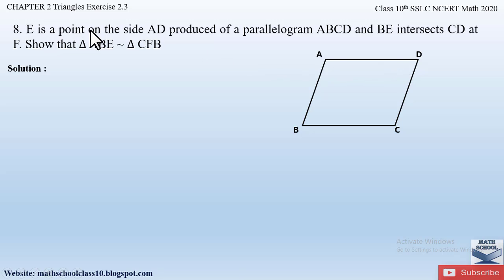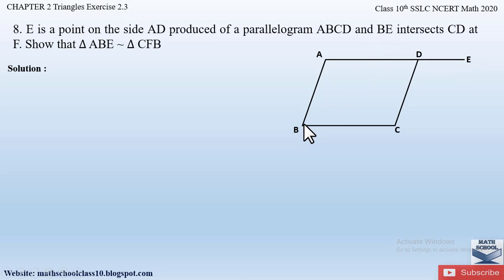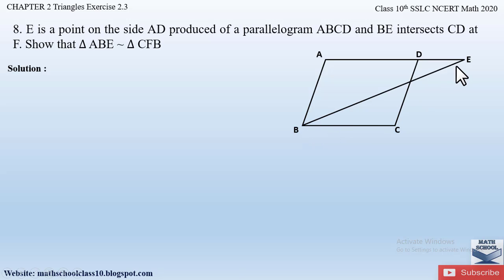So this is parallelogram ABCD. They are telling us that E is a point on the side AD produced, so if we produce side AD we get point E. We then draw line BE, which intersects CD at point F. Now we have to prove that triangle ABE is similar to triangle CFB.